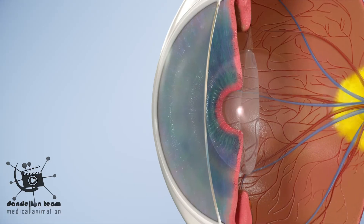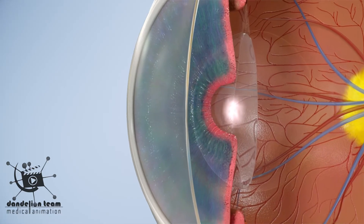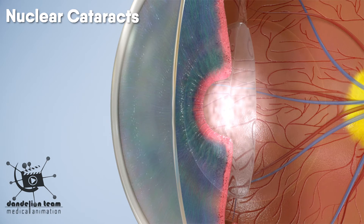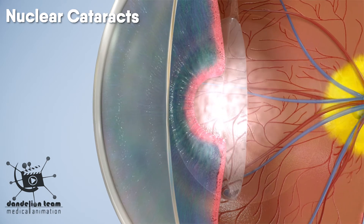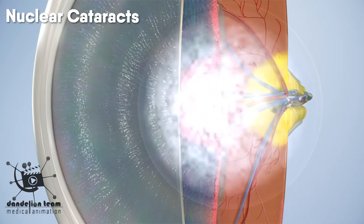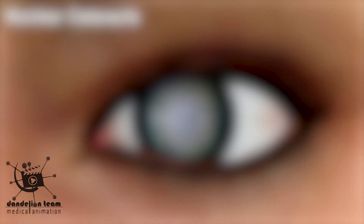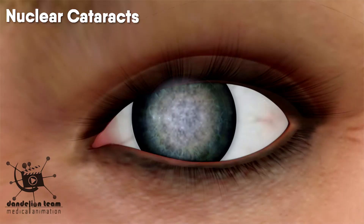Types of cataracts. Nuclear cataracts are an age-related type of cataract that causes the center of the lens to cloud and harden. It is the most common type.